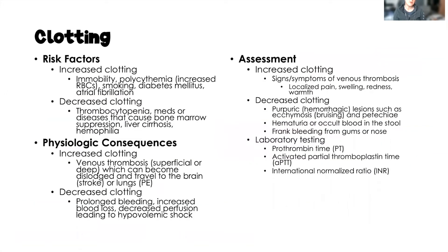When we think about risk factors, we have risk factors for both increased and decreased clotting. For increased clotting: immobility or prolonged decreased mobility can cause problems with increased clotting. Polycythemia — too many red blood cells — makes our blood thicker and predisposes us to developing clots. Smoking decreases platelet aggregation. Diabetes mellitus impairs blood flow, which may increase clotting. And of course, atrial fibrillation.